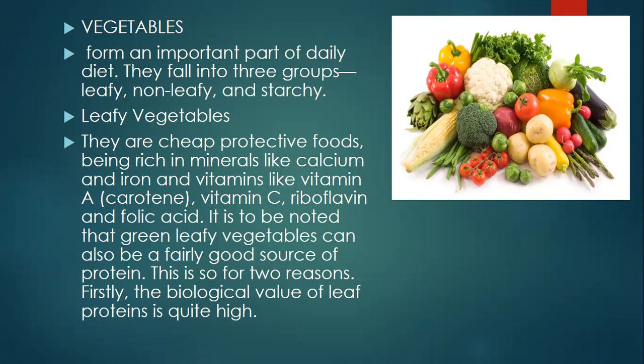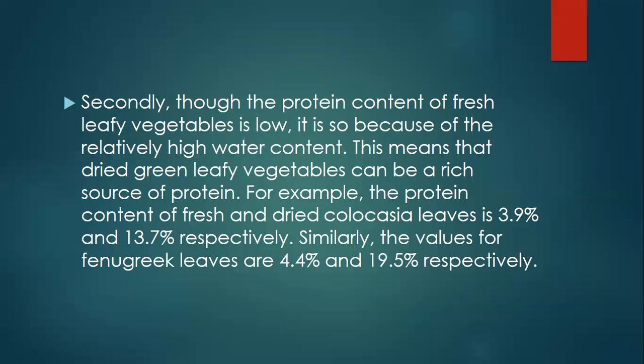This is so for two reasons. Firstly, the biological value of leaf proteins is quite high. Secondly, although the protein content of fresh leafy vegetables is low because of their relatively high water content, this means that dried green leafy vegetables can be a rich source of protein. For example, the protein content of fresh and dried drumstick leaves is 3.9% and 13.7% respectively.